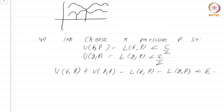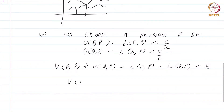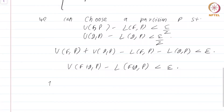Excellent — what does this give? We have L(f,p) + L(g,p) as the left extreme and U(f,p) + U(g,p) as the right extreme. This immediately gives us U(f+g, p) − L(f+g, p) < ε, because this inequality is true for the left and right extremes, it must be true for anything sandwiched in between. This shows that f+g is Riemann integrable.